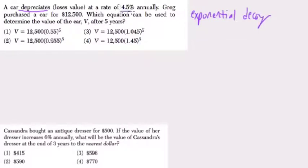We're losing 4.5% annually, and we start with $12,500. What equation can we use to determine the value of the car in five years? So think about this. We start with $12,500.